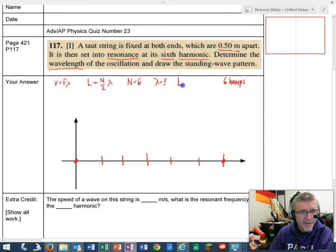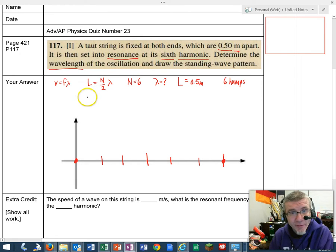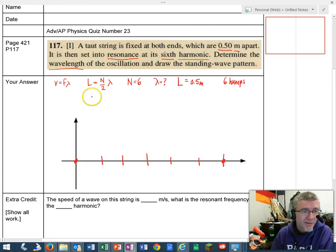L, the length of the string, equals 0.5 meters. So, solving for lambda, two times L over N equals lambda.